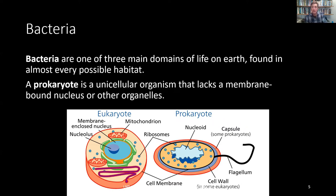Bacteria are one of three main domains of life on earth, found in almost every possible habitat. They are prokaryotes — unicellular organisms that lack a membrane-bound nucleus or other organelles. The two diagrams shown compare a eukaryote on the left, like an animal cell with many organized organelles, to a prokaryote on the right, where all the parts are just mixed in the middle. That's bacteria.